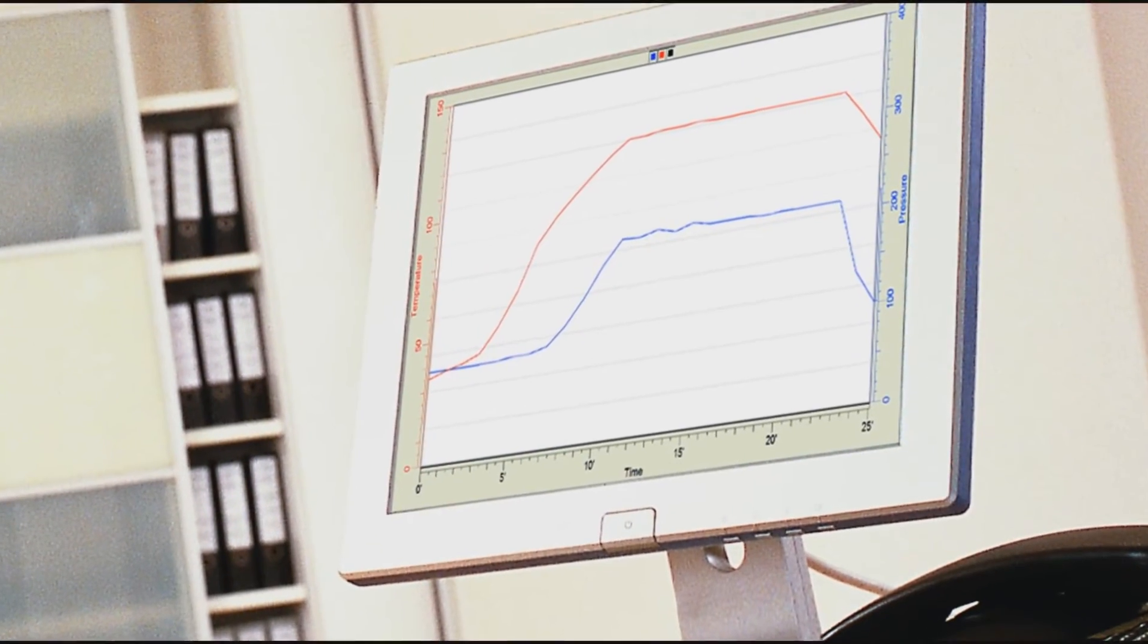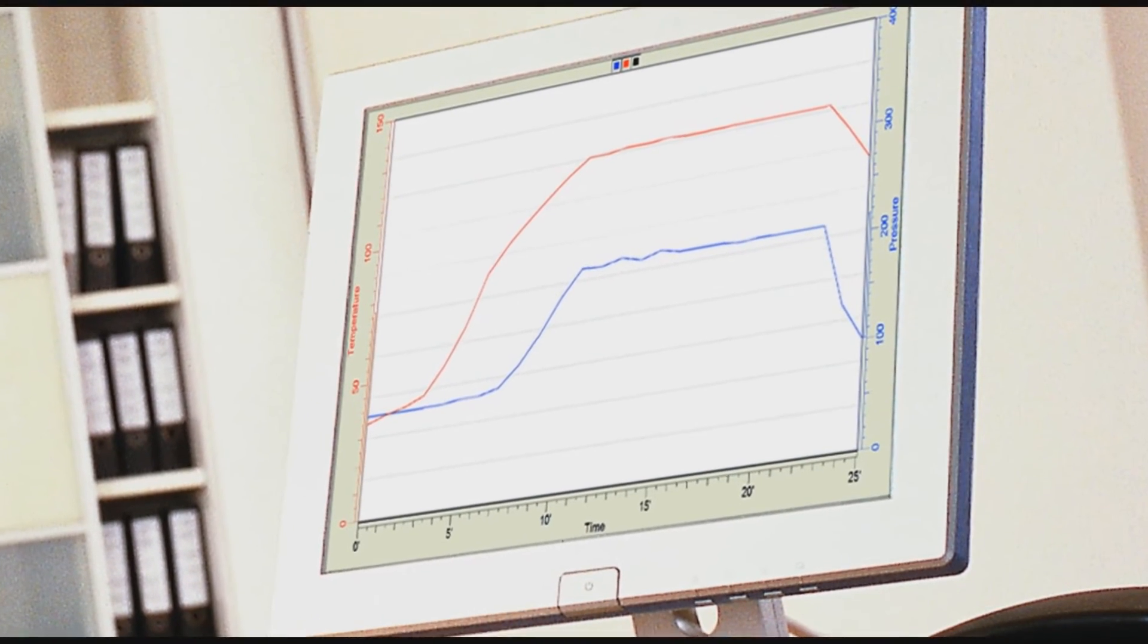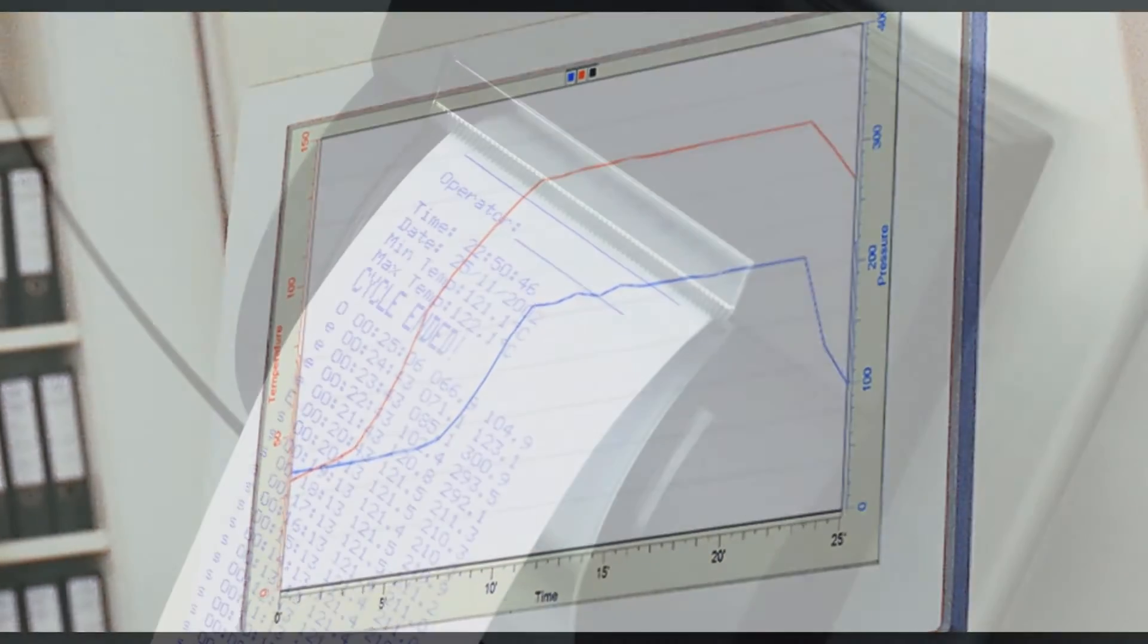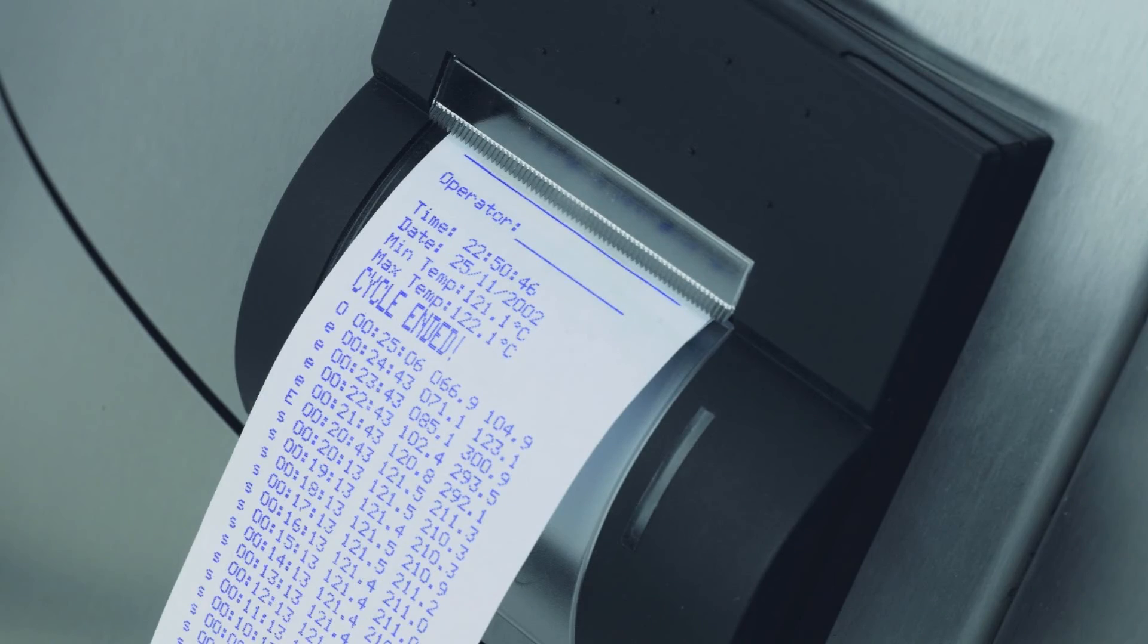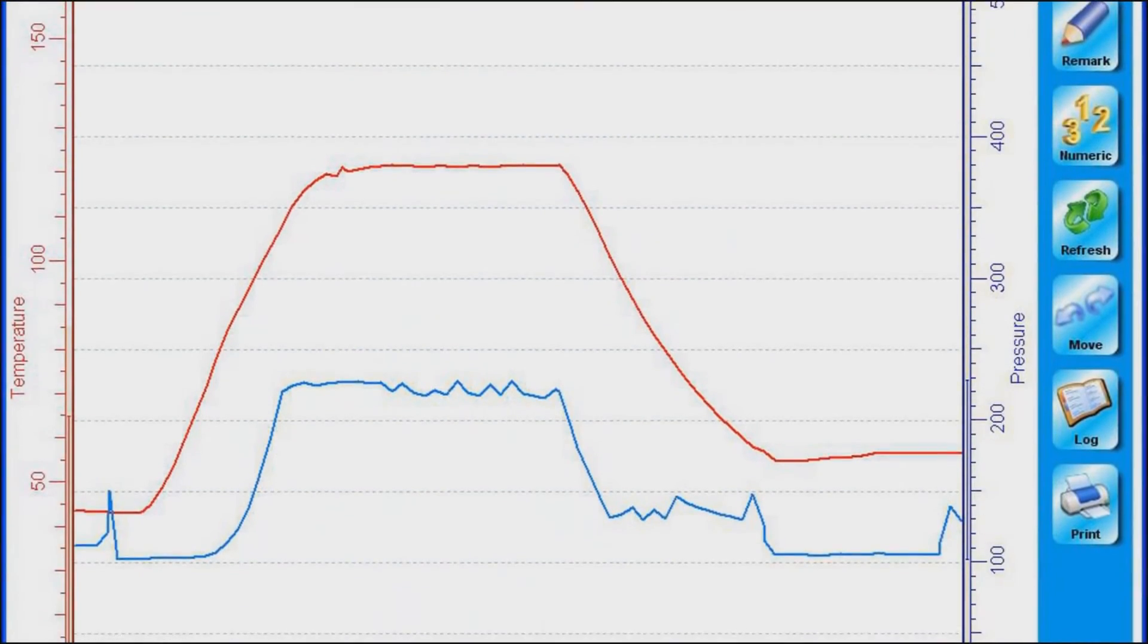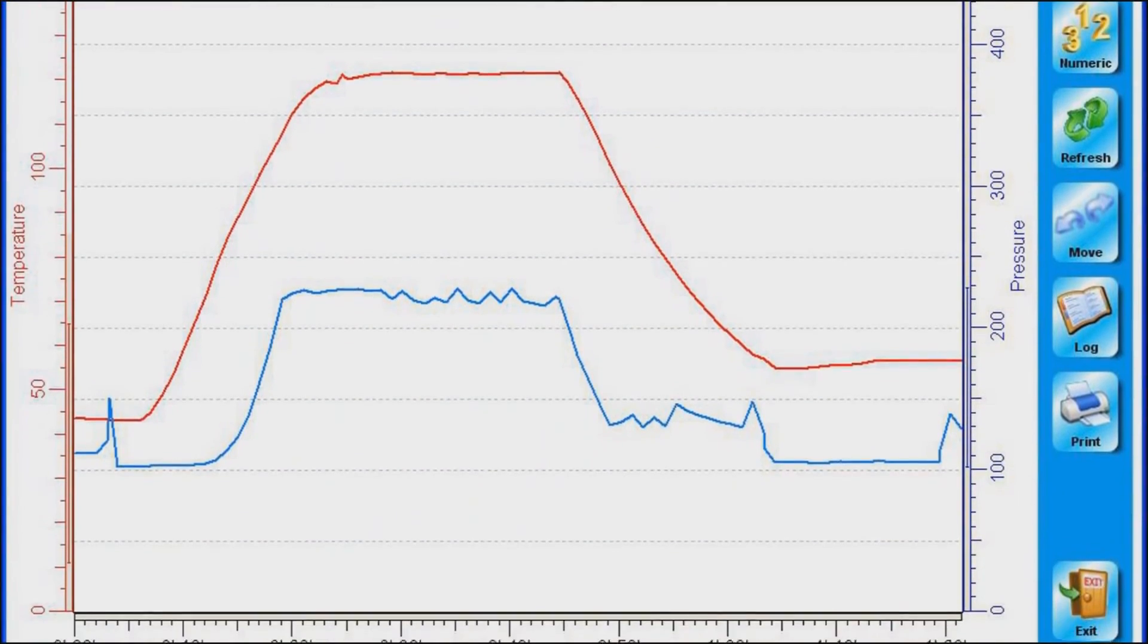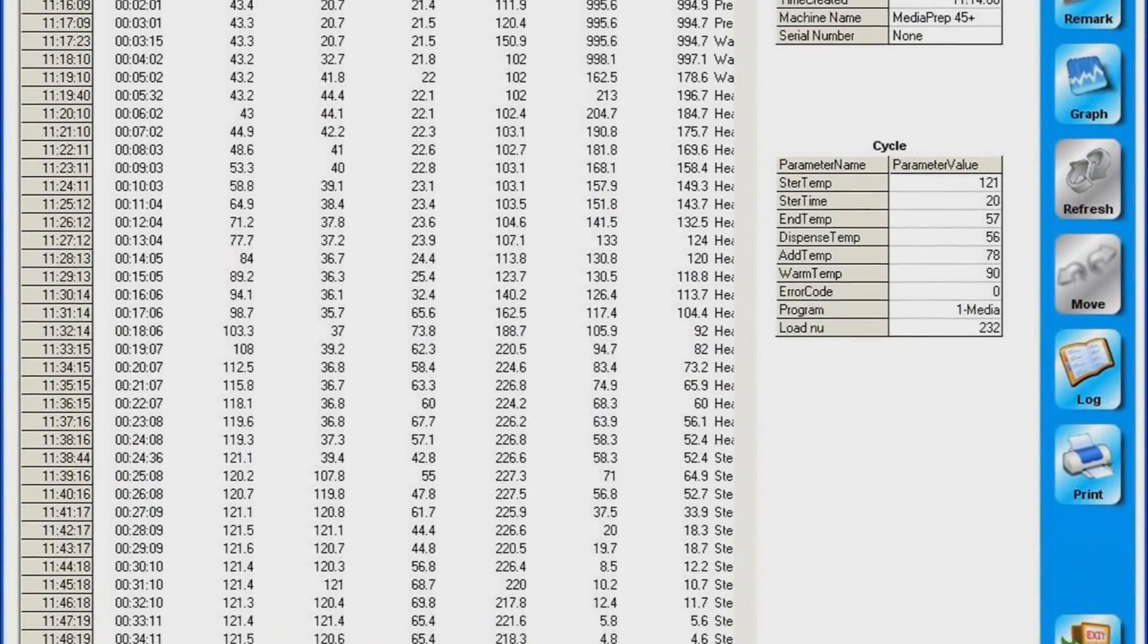For quality control and documentation purposes, cycle information can be recorded via ticket printer or via PC. Information on temperature, time, and pressure can be stored with each cycle run. This information can be displayed in either graphical or numerical formats.